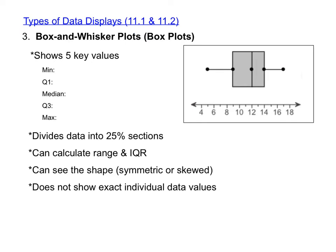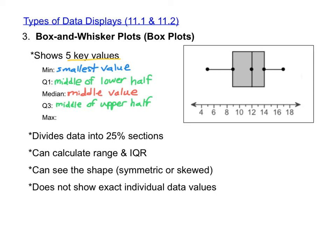The final type of data display that we learned about was a box and whisker plot, also called a box plot. The advantage of a box plot is that it gives us five key values. The first is the minimum, which is just the smallest value. We can also find the first quartile, abbreviated Q1, which is the middle of the lower half of the data. Next, we can find the median — the middle of the entire data set. The third quartile, Q3, is the middle of the upper half of the data. Finally, we can identify the maximum, which is the largest value. These five values are the five key points on the box plot. The minimum and the maximum are the whiskers, so the min is the leftmost whisker and the maximum is the rightmost whisker.